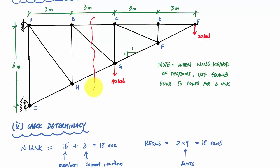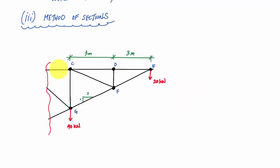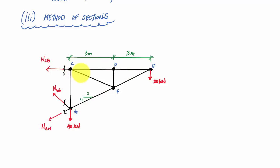I'm going to redraw the free body diagram of my cut. Here's the right side. I'll erase the members I've cut through and replace them with forces, assuming tension in each member. From the two-to-one ratio, having gone six meters horizontally, the vertical height between C and G is three meters. Now I can use my three equilibrium equations and solve for NCB, NGB, and NGH.